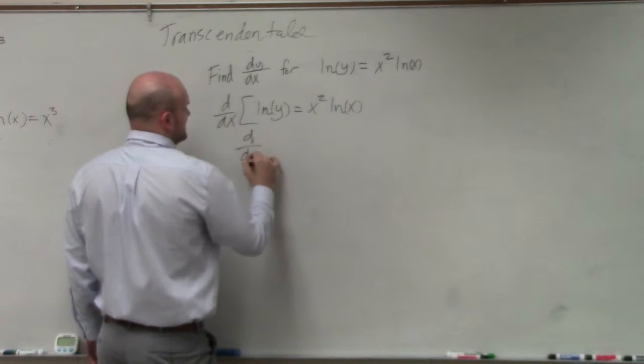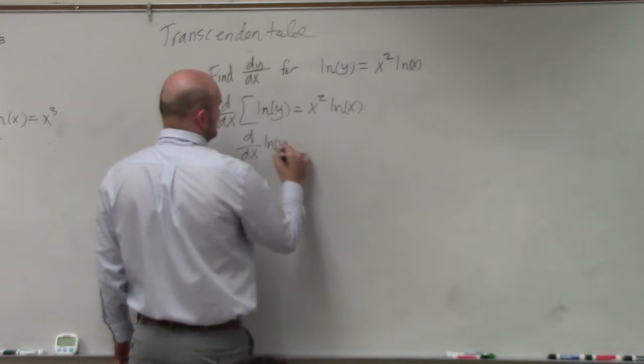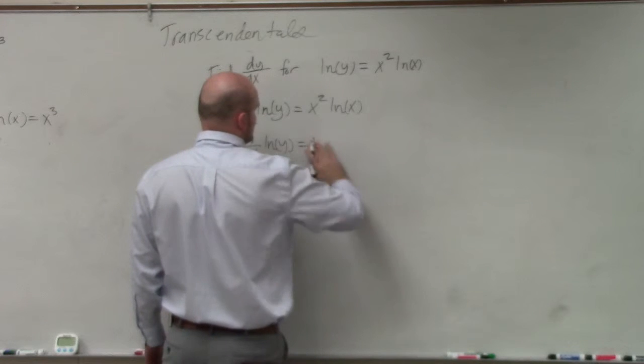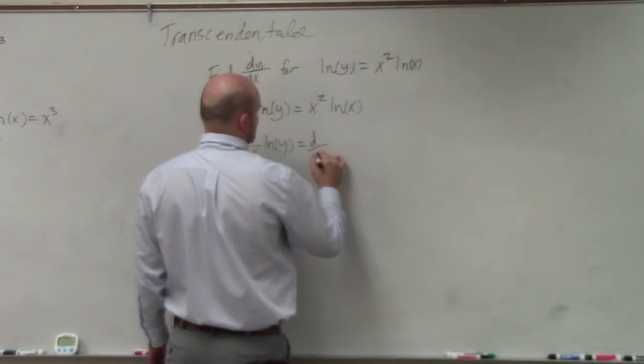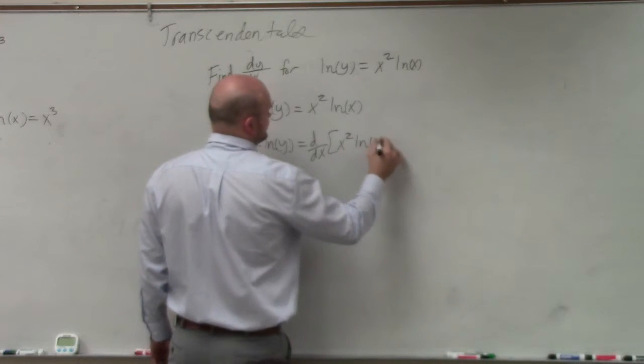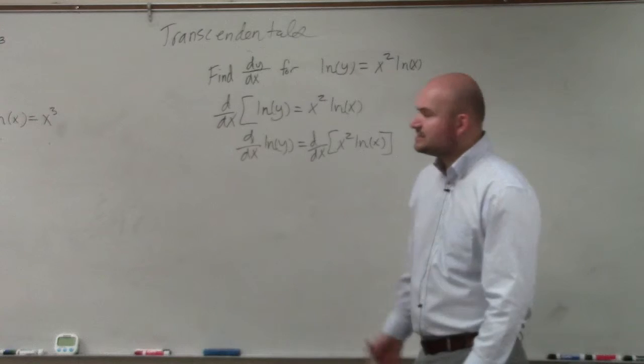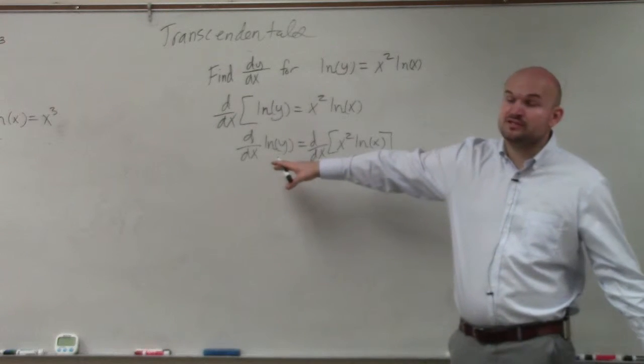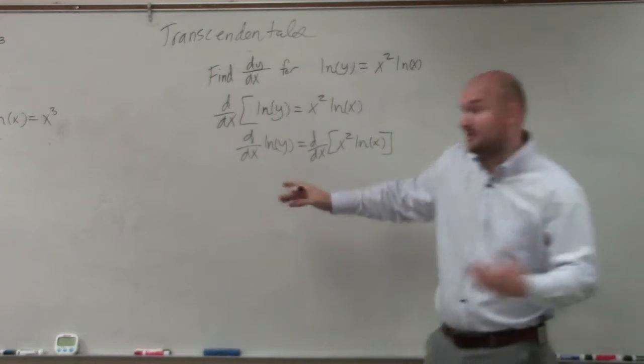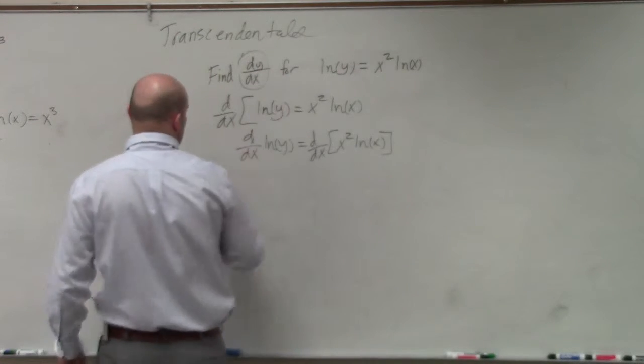Therefore, that's going to be d over dx of ln(y) equals d over dx of x squared ln(x). Now, notice that we're taking the derivative with respect to x. So therefore, we're taking the derivative of y. Make sure we do the derivative, but then we have to include dy/dx, which we are solving for.